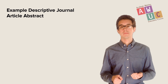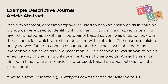Here is an example of an informative abstract: "In this experiment, chromatography was used to analyze amino acids in solution. Standards were used to identify unknown amino acids in a mixture. Ascending layer chromatography with an isopropanol-based solvent was used to separate the amino acids, which were then detected with ninhydrin. The unknown mixture analyzed was found to contain aspartate and histidine. It was observed that hydrophobic amino acids were most mobile. This technique was shown to be an effective way of analyzing unknown mixtures of amino acids. A mechanism for ninhydrin binding to amino acids is proposed, based on the observations from this experiment." This example provides a clear, easy-to-understand overview of the kind of information often found in informative journal article abstracts.